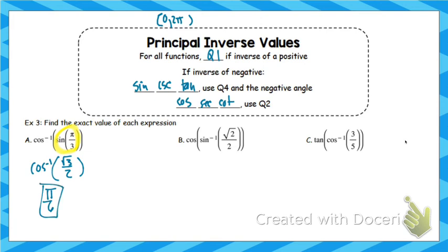Let's try the same idea backwards. Start with sine inverse of root 2 over 2: the y-coordinate is root 2 over 2, which happens at pi over 4. Now find the cosine of pi over 4: the x-coordinate at pi over 4 is root 2 over 2.